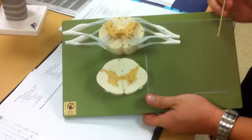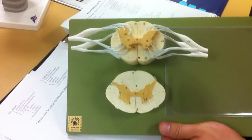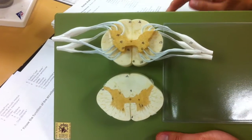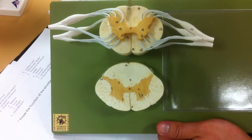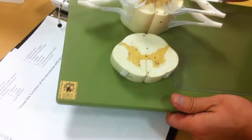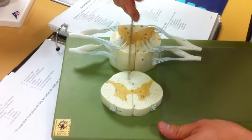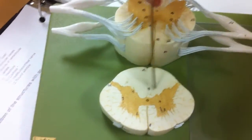This is the spinal cord model. First I'll go over the white matter. In the white matter, there's the dorsal funiculi. Use the bottom one, it's easier. The dorsal funiculi because it's on the posterior side.